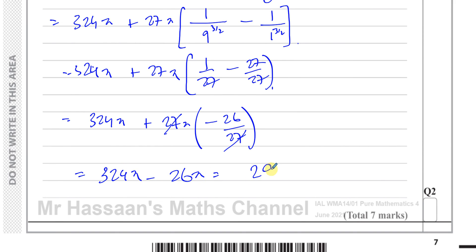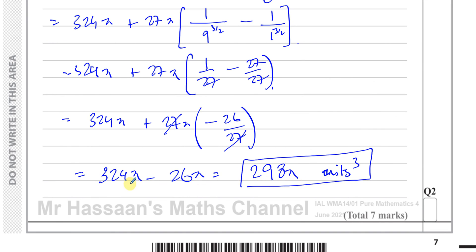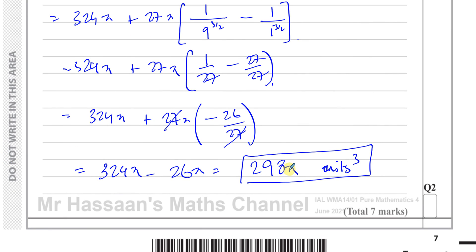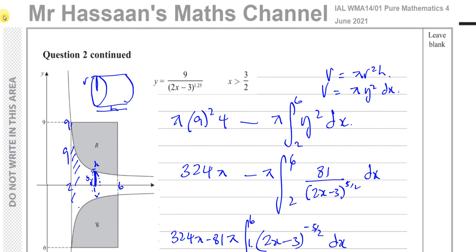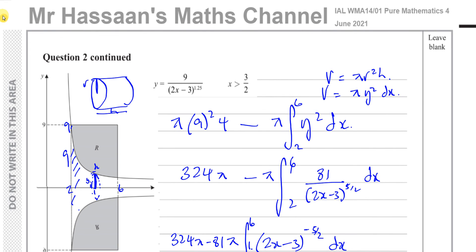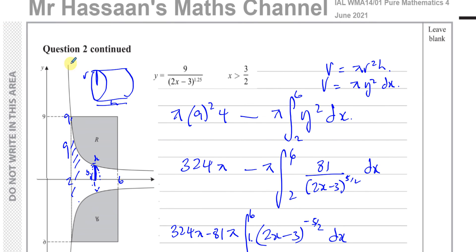The answer is 298π cubic units. That is the answer to question number 2 from June 2021 P4 International A-Level.